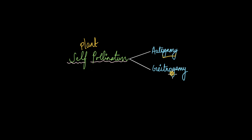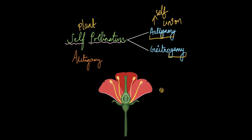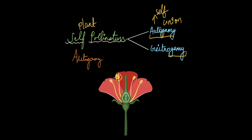The word 'gamy,' common to both categories, means union or fusion in Greek. In autogamy, 'auto' means self. So autogamy is pure self-pollination where there is transfer of pollen grains from the anther of one flower to the stigma of the same flower. Pure autogamy is quite rare because for this to happen, the stamen and the pistil must be located very close to each other, as autogamy does not involve any pollinating agents. So the location of the stamen and pistil is very important in autogamy.